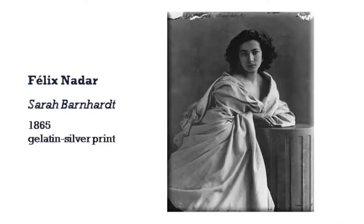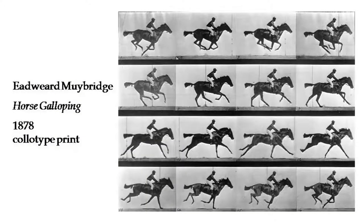Let us look at a few photographic examples from mid-19th century. For example, this one by a favourite photographer, who took this photograph in 1865. Then there is Eadweard Muybridge's Horse Galloping in 1878. These are different kinds of technology called collotype prints. What photography did, as far as painters were concerned, was show how the camera could actually capture the details of a movement — details which our naked eye tends to miss. It is difficult to notice each and every detail of a moving object, whereas the camera could do that.